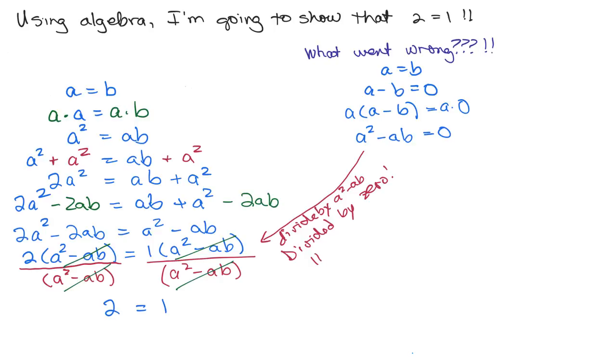That's an illegal thing to do. The problem is right here, when I divided by 0, you're going to get a false statement. So remember, you can never divide by 0. That is undefined. So on the very last step here, when I divided by 0, I get a false statement. Therefore, 2 does not really equal 1.